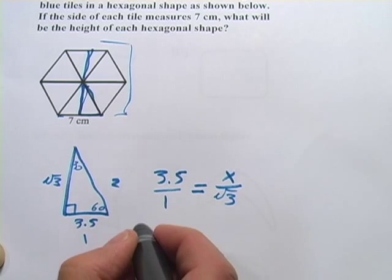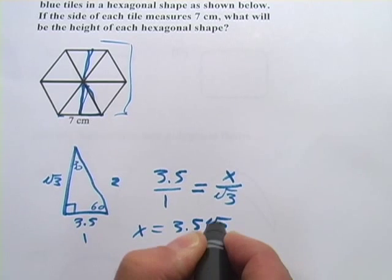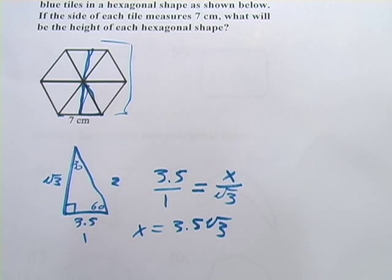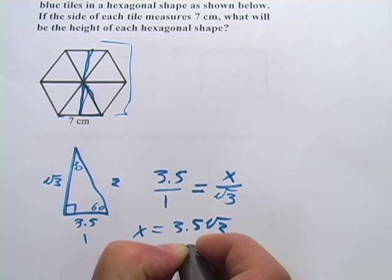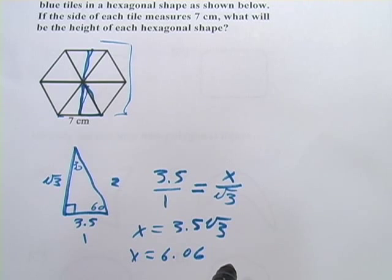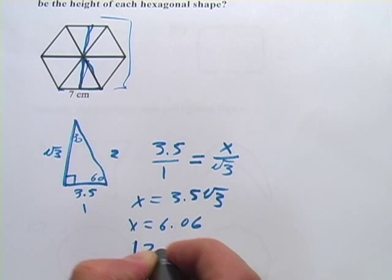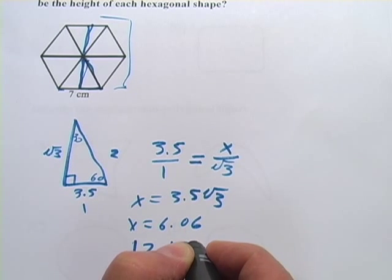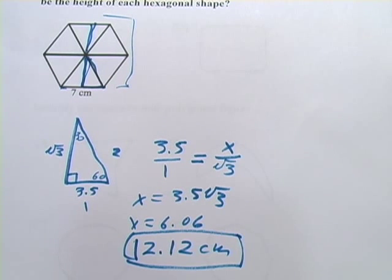When I cross multiply, I get x equals 3.5 times the square root of 3. So let's go ahead and plug that into the calculator. And I get x equals 6.06, but remember I've got to multiply that by 2 to get the height. So I get the height as 12.12, and these were centimeters, and that is our answer.